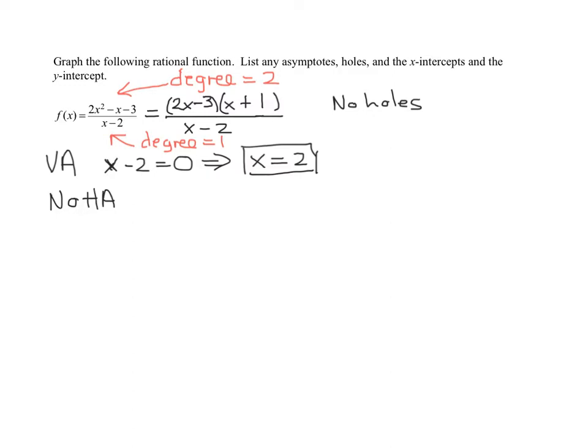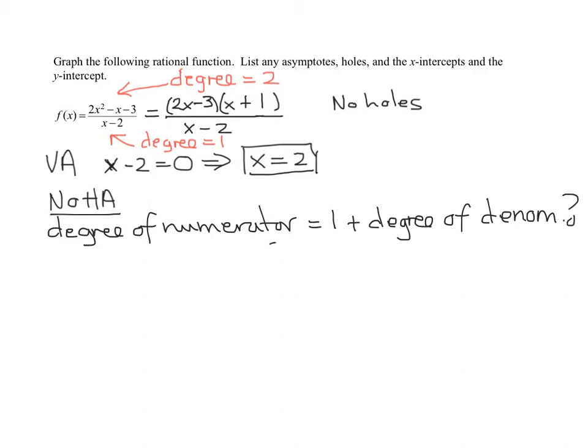We have to decide, is there a slant asymptote? A slant asymptote is when the degree of the numerator is 1 more than the degree of the denominator. Is that the case here? Is the degree of the numerator equal to 1 more than the degree of the denominator? The degree of the numerator is 2. Is 2 equal to 1 plus the degree of the denominator? Yes, that is true. Therefore, we know in this case we have a slant asymptote.